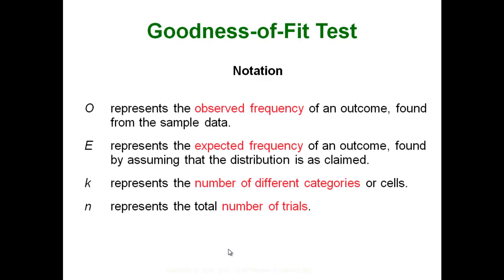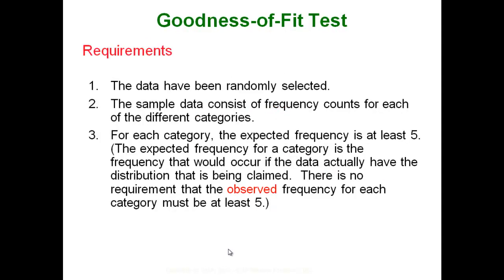Since we are dealing with a completely new type of test we are dealing with a completely new set of notation. O is going to represent the observed frequency of each outcome. So you will have a separate O for each frequency. You would have a separate O that would represent the observed frequency of Democrat voters, the observed frequency of Republicans, et cetera. And then E is the expected frequency of each outcome, the 35, 30, 15, and 20 that we had for our expected distribution of Democrats, Republicans, independents, and non-affiliated. K is going to represent the number of different categories. So in our example there were four. And then N would just represent the total number of trials, meaning the size of your sample, how many total votes were in the voter box that you were testing.